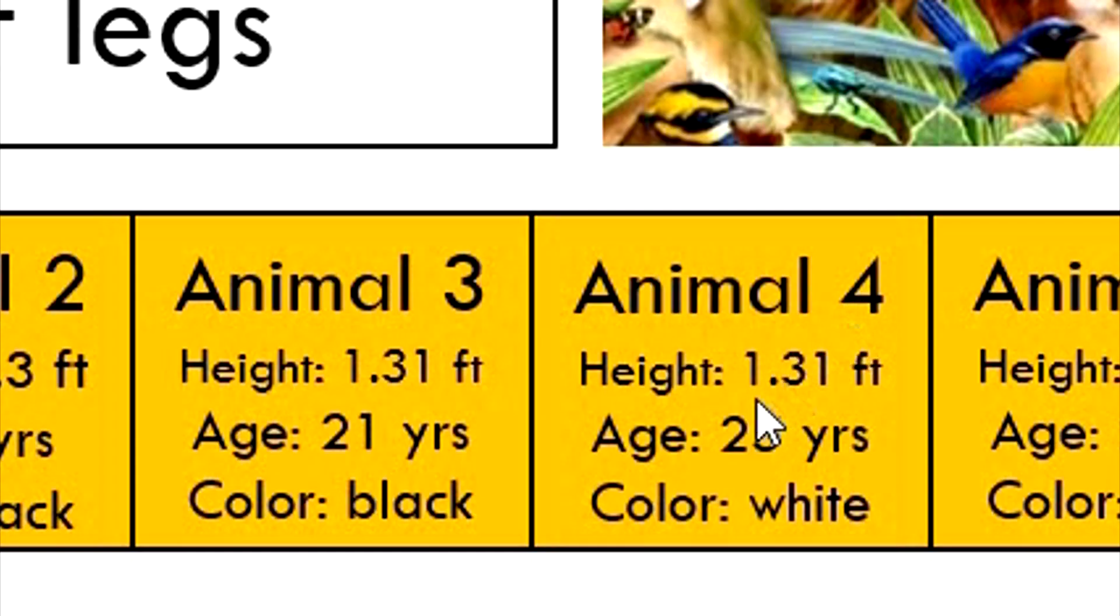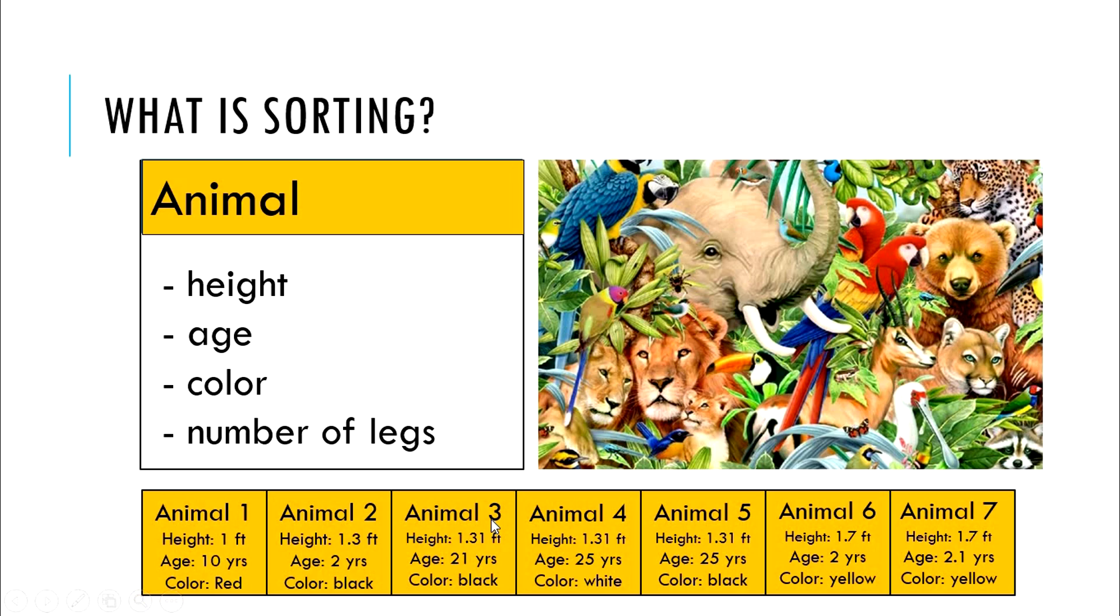Animal 4, on the other hand, has the same height as animal 3. So we move on to the second sorting criteria, which is the age. Animal 4 is older than animal 3, and therefore, it is listed after animal 3.